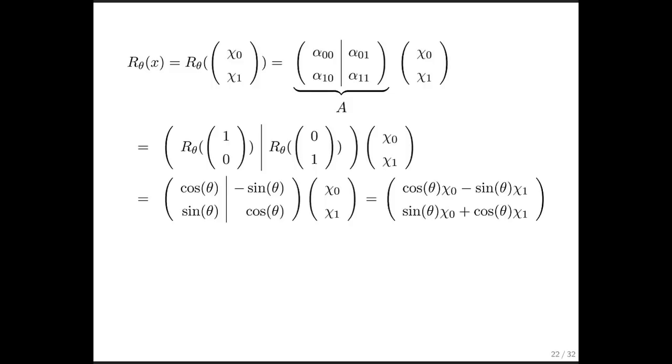And therefore, we know that if we do this matrix vector multiplication, we get the rotated vector. And that's given right here. And we can also think of that as this linear combination of the rotated unit basis vectors.